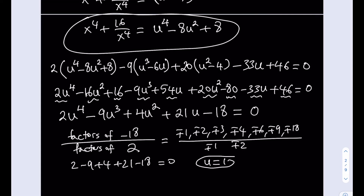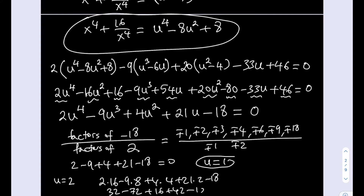You could divide by u minus 1, or test another solution. Checking u equals 2: 2 times 16 minus 9 times 8 plus 4 times 4 plus 21 times 2 minus 18 gives 32 minus 72 plus 16 plus 42 minus 18. Positive terms sum to 90, negative terms sum to negative 90, so this is also 0. u equals 2 is another solution.